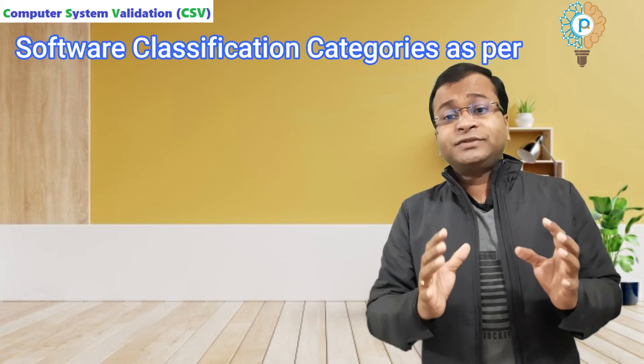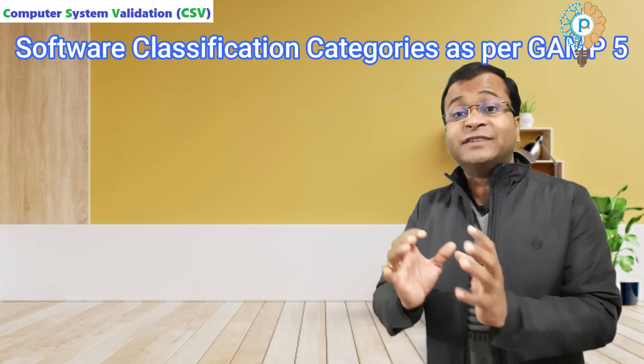Now I will discuss software classification categorized as per GAMP 5 guideline. The previous version of GAMP 5 was GAMP 4. In GAMP 4, there were five categories of software: Category 1 to Category 5. Now I am telling you step by step.